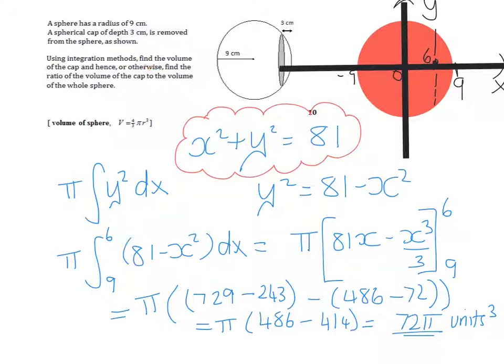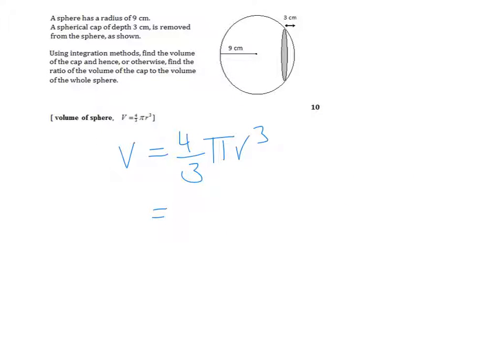Hence or otherwise find the ratio of the volume of the cap to the volume of the sphere. I'm going to work out the volume of the sphere just by using this formula here. The radius is 9. So the volume is 4 thirds times pi times 9 cubed, which is going to work out at 972 times pi.